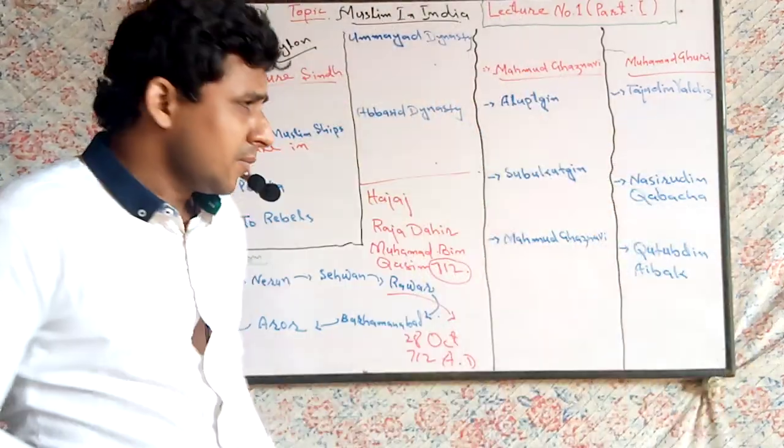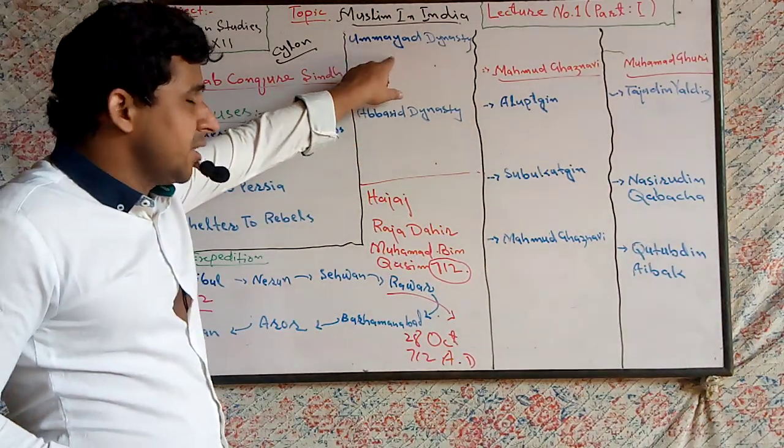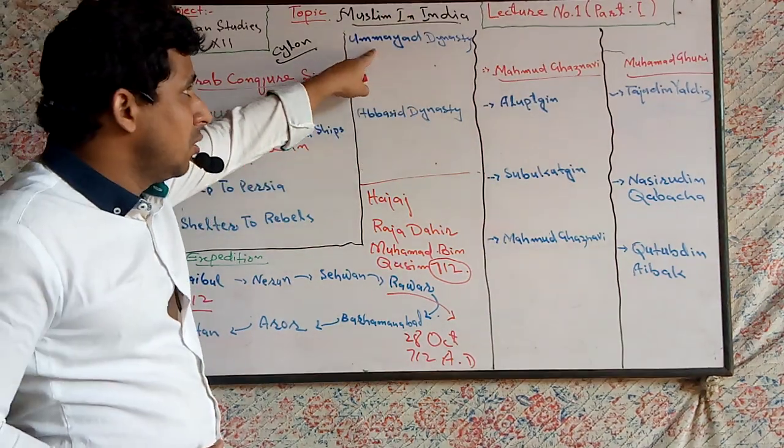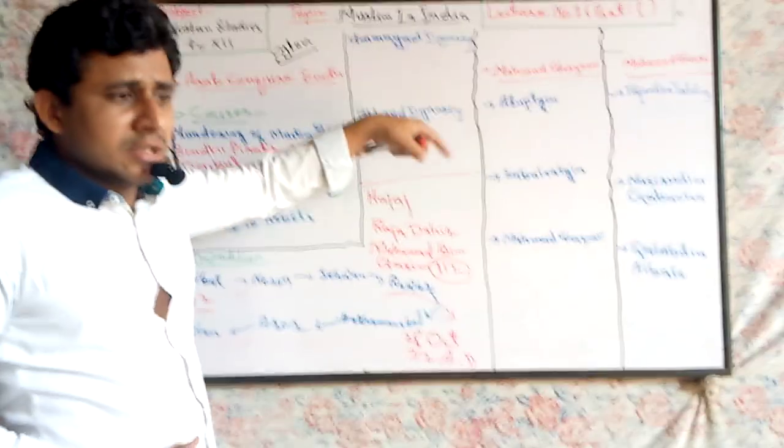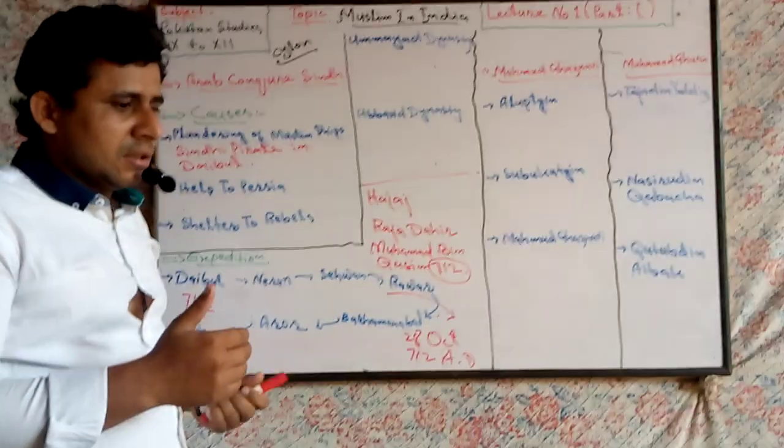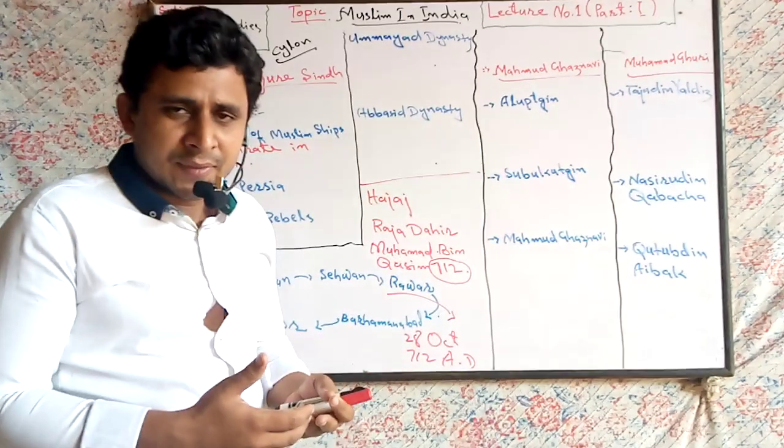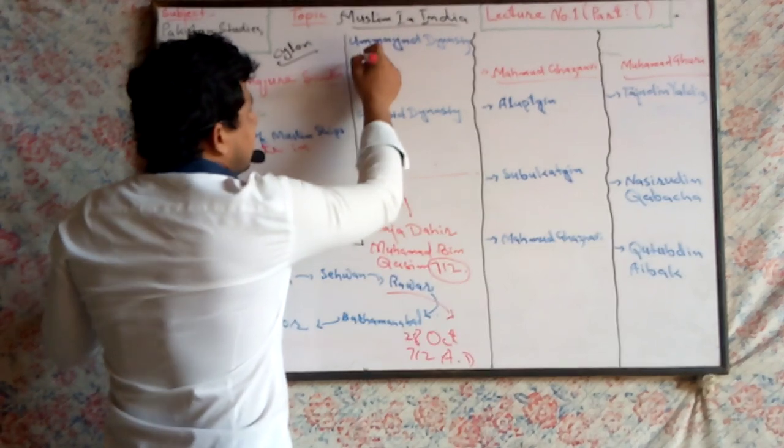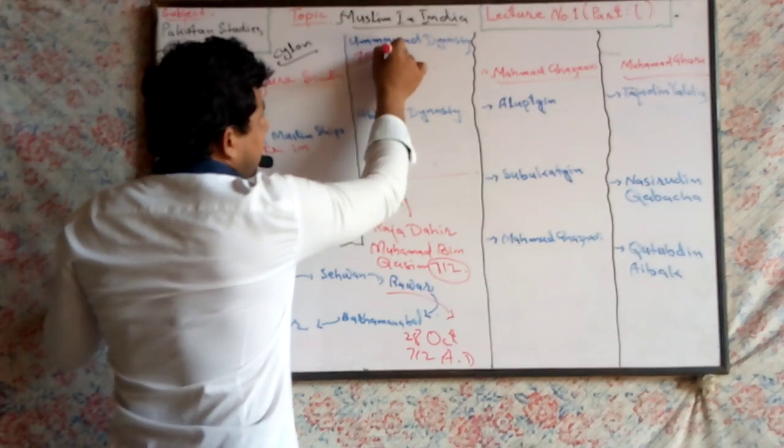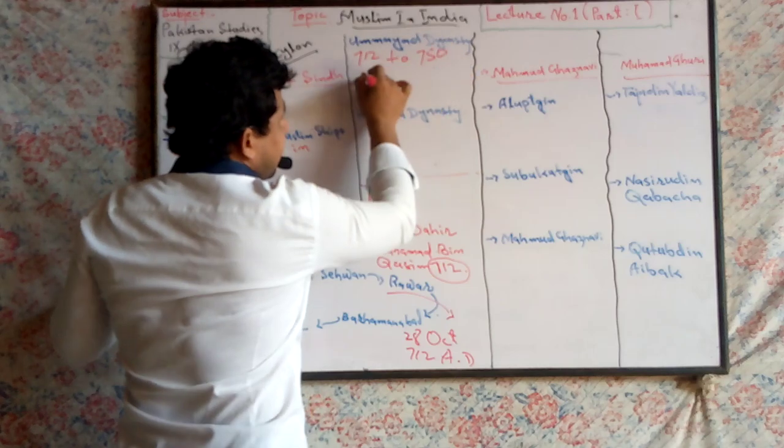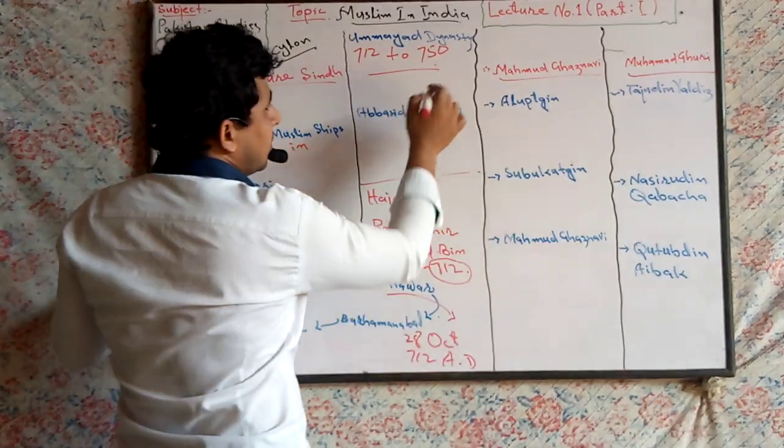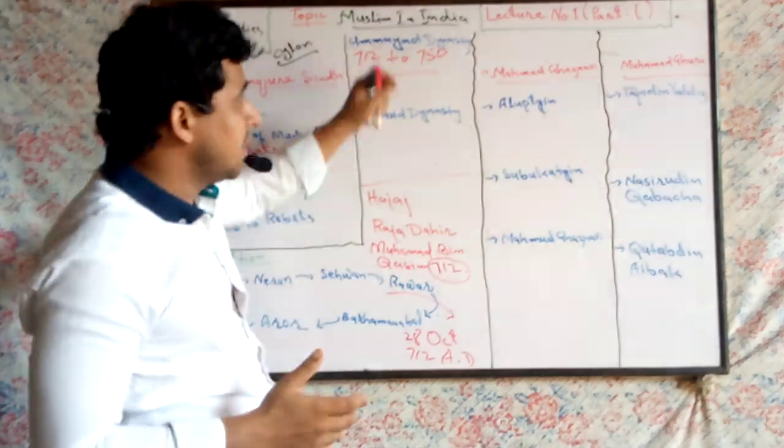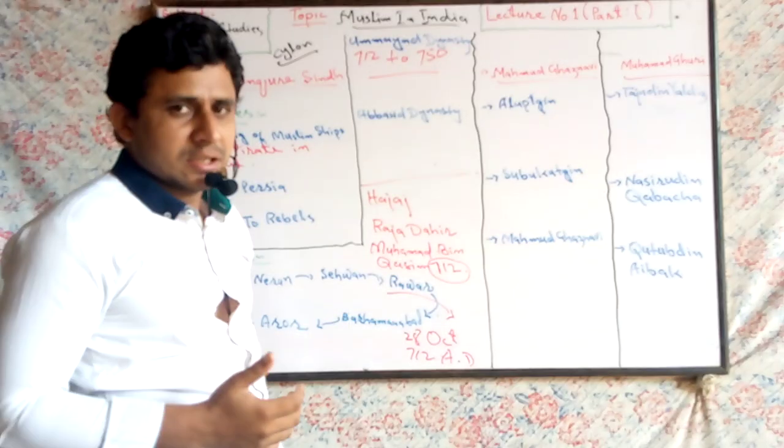Umayyad Dynasty - what is Umayyad Dynasty? Umayyad Dynasty is Umayyad Khilafat. Umayyad is a tribe, dynasty means a family rule. This is a Khilafat rule from 712 to 750 in Sindh.